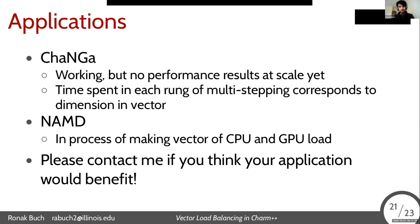For another angle on vector load balancing, I'm also doing the same thing for NAMD. NAMD is a molecular dynamics simulation that uses CUDA very effectively. One of the things we'd like to do is balance both CPU and GPU load to ensure it works well regardless of hardware resources — something I'm actively measuring right now. For anyone out there who thinks their application would benefit from vector load balancing or has characteristics we can exploit, please contact me. I would love to hear from other CHARM users who can use this.